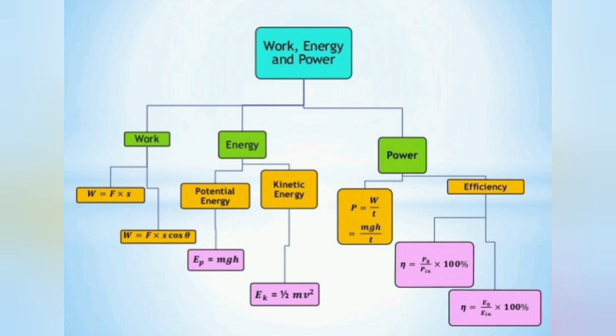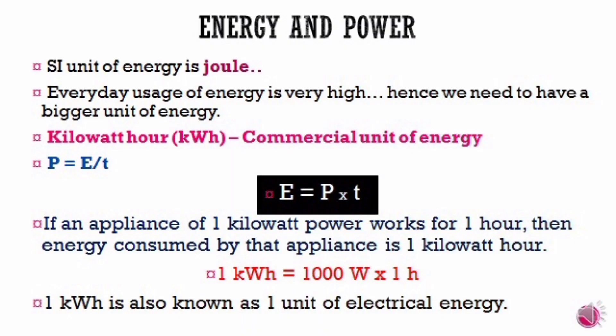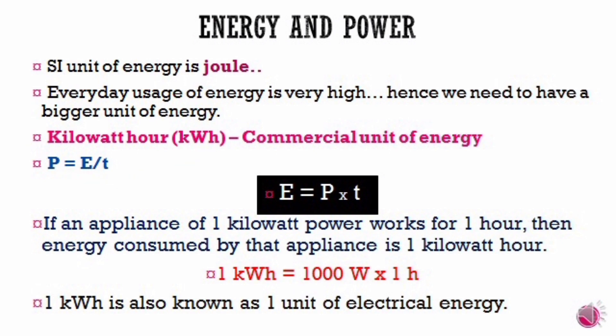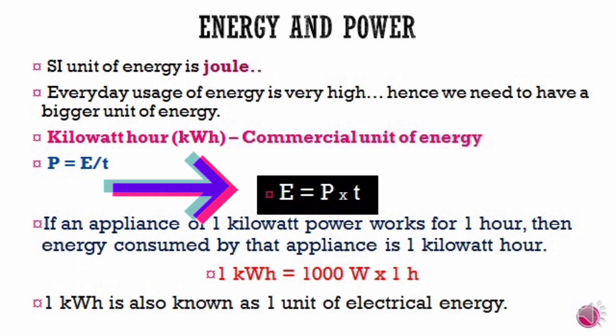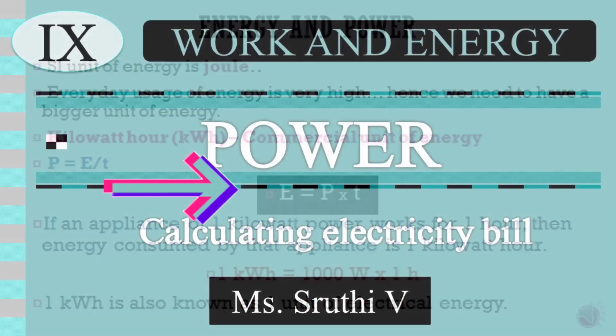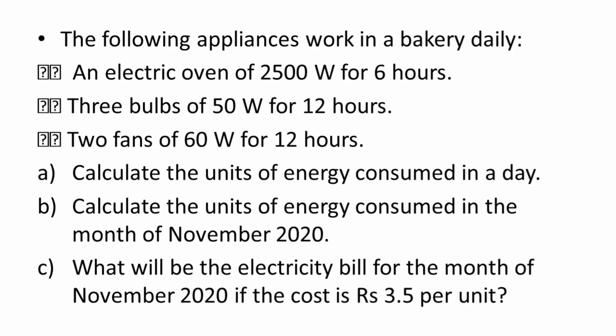We have learnt that energy is the capability to do work and power is the rate at which work is done. The SI unit of energy is joule, and since the everyday usage of energy is very high, we use a bigger unit of energy known as kilowatt hour. The formula that connects energy, power and time is E = P × T. So in the following problem, the formula that is going to be used is E = P × T, and let us now learn how to calculate electricity bill.